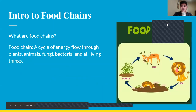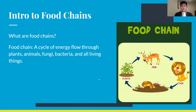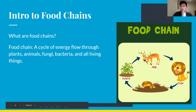So what are food chains? A food chain is a cycle of energy flow through plants, animals, fungi, bacteria, and all living things. As you can see, there's a preview of a food chain — notice how it's circular and it's a flow.